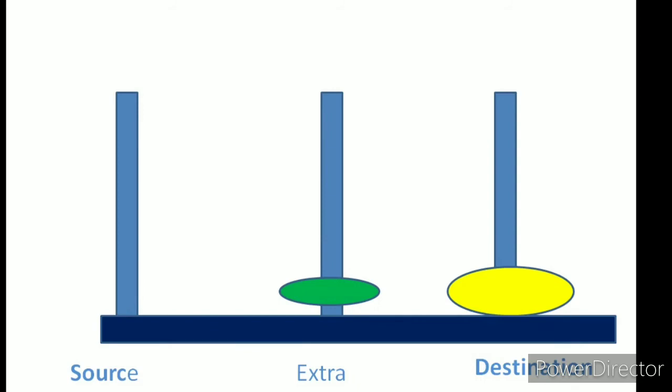Now next move, as you can see, this green disk which is placed at the extra pole, that is the smaller one. And the disk which is present at the destination, that is the larger one. So according to the rule, we can keep the particular green disk on the yellow disk. Yes, we have done and we got the solution. We have moved disks from source pole to destination pole by applying all the rules.